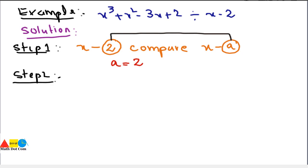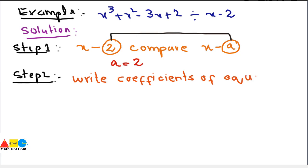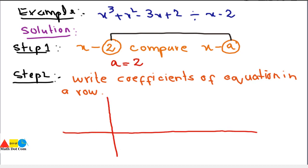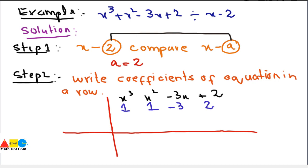Step 2: write the coefficients of the given equation in a row. Draw two lines and write the coefficients. The equation is x³ + x² - 3x + 2. The coefficient of x³ is 1, coefficient of x² is 1, coefficient of -3x is -3, and the constant is 2. The value a = 2 is written on the left.